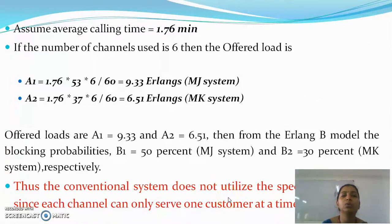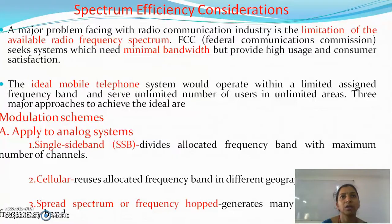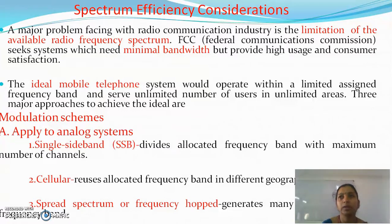Since we are not able to provide service to more customers and channels are very limited, the conventional mobile telephone system is inefficient in frequency spectrum utilization. These are the three major limitations: limited service capability, poor service performance, and inefficient frequency spectrum utilization. The available spectrum, which is always finite, is utilized inefficiently, and that is why it could not serve more customers efficiently.